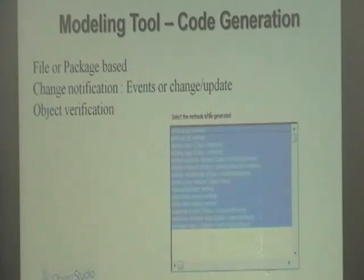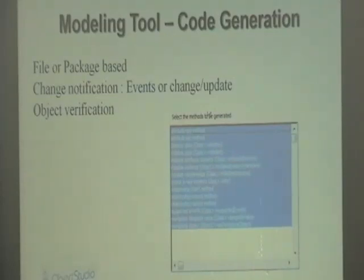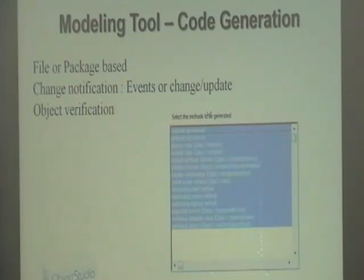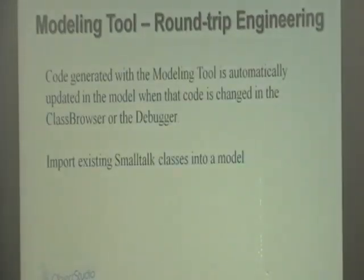You can define object verification: if you define an instance variable as a String and assign a non-String value, it will throw an error. You can also define which methods to generate — getters, setters, initialization — and leave out others to create yourself. The code generation templates are hard-coded but there is documentation on how to change them, though you need to change some methods if you want to generate your own code. It's a round-trip engineering tool, meaning that once you generate code and start running it, if you change methods in the class browser or debugger, the changes are reflected back in the model.